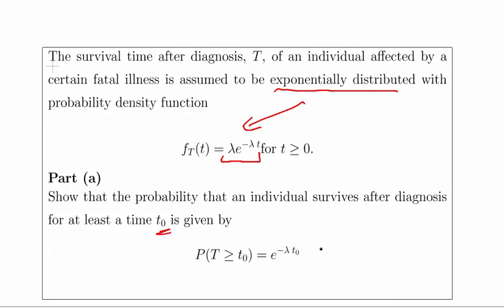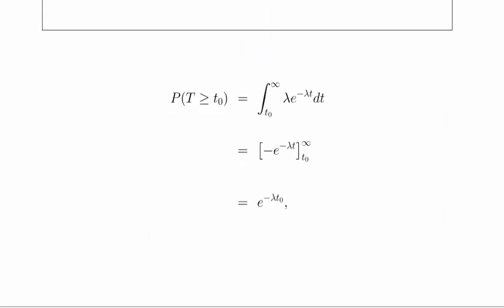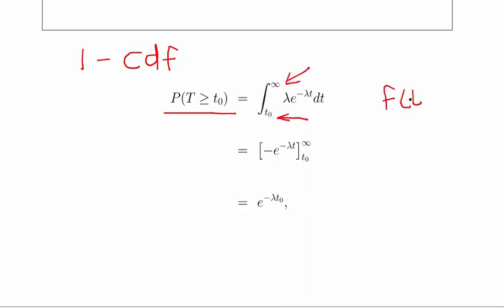t₀ is just some unspecified but definite quantity. This is straightforward if you're familiar with probability density functions and calculating inverse cumulative distribution functions. This is 1 minus the CDF essentially — the probability of T greater than or equal to t₀ is the integral from t₀ to infinity of the probability density function. It's the complement of the cumulative distribution function, so it's a definite integral.